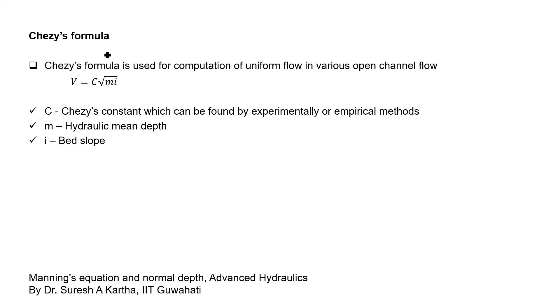Chez's formula is used to compute the uniform flow in various open channel flows. The formula is given by v, the velocity of flow, equals c times square root of mi, where c is Chez's constant which can be found experimentally or by various empirical methods. M is the hydraulic mean depth, equal to cross-sectional area of the channel by wetted perimeter (a by p), and i is the bed slope.